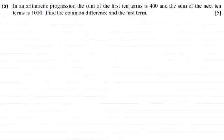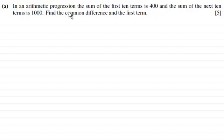Hi there. Now for this question we're told that in an arithmetic progression the sum of the first 10 terms is 400 and the sum of the next 10 terms is a thousand. And we've got to find the common difference and the first term for five marks.